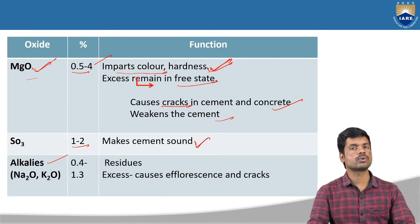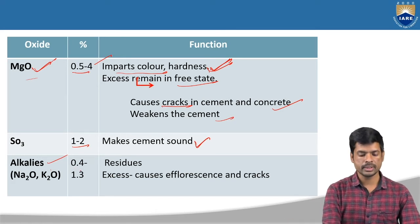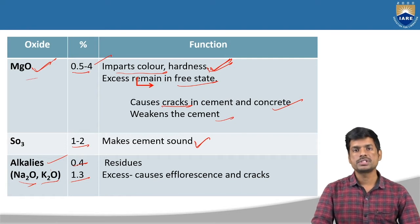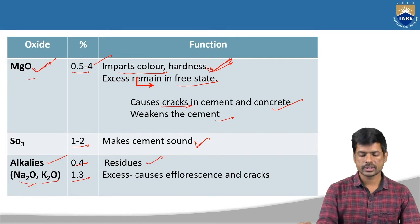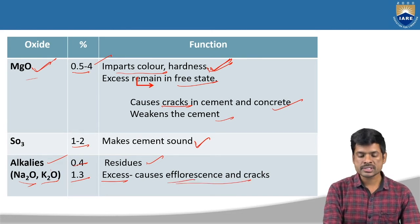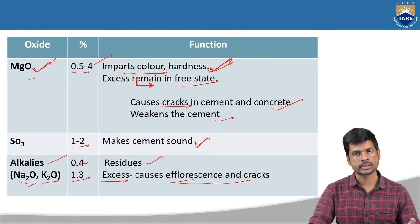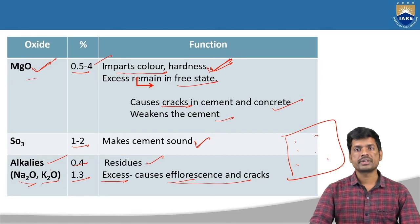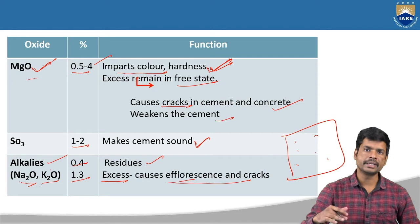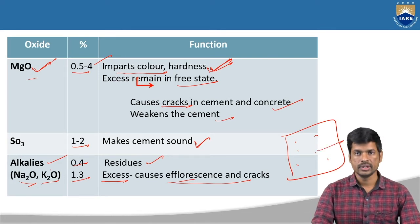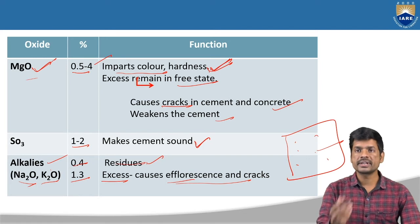And next one, alkalis — these are also called as residues. The percentage of alkalis will be 0.4 to 1.3%. In these alkalis, we will be having sodium oxide and potassium oxide. These are some of the alkalis we are going to add, and they will be acting as residues in the cement. Excess of these particular residues or alkalis will be causing efflorescence and cracks. Efflorescence is nothing but after casting the cement concrete components, we are getting white-colored powder on the component. You may observe this in your homes or structures also — that white-colored powder on the surface is called efflorescence.